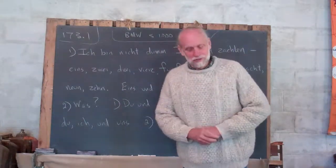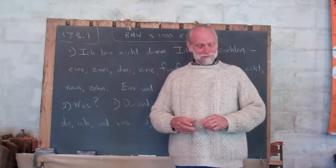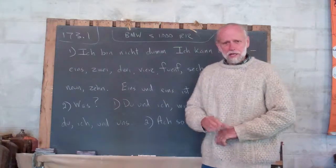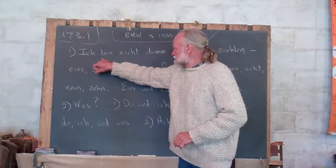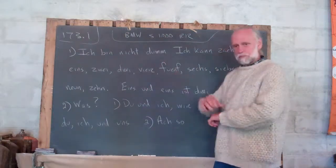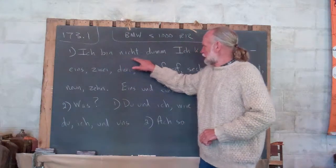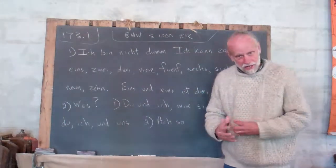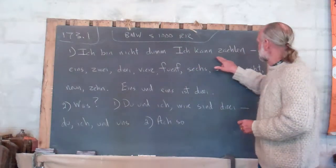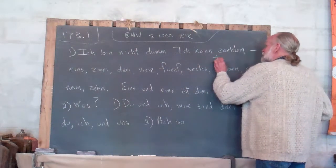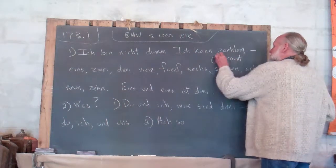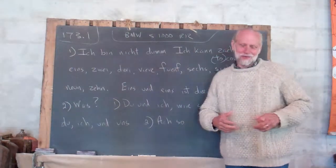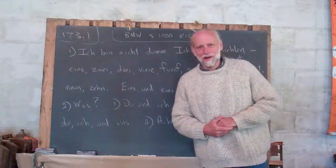And then he goes on to say, so now he's got her attention. He says to her, ich bin nicht dumm. I am not dumm. And he's going to prove it. He says ich kann zählen. I can, this would be to count. I can count. And so here, here's an excuse to show you how to count in German.